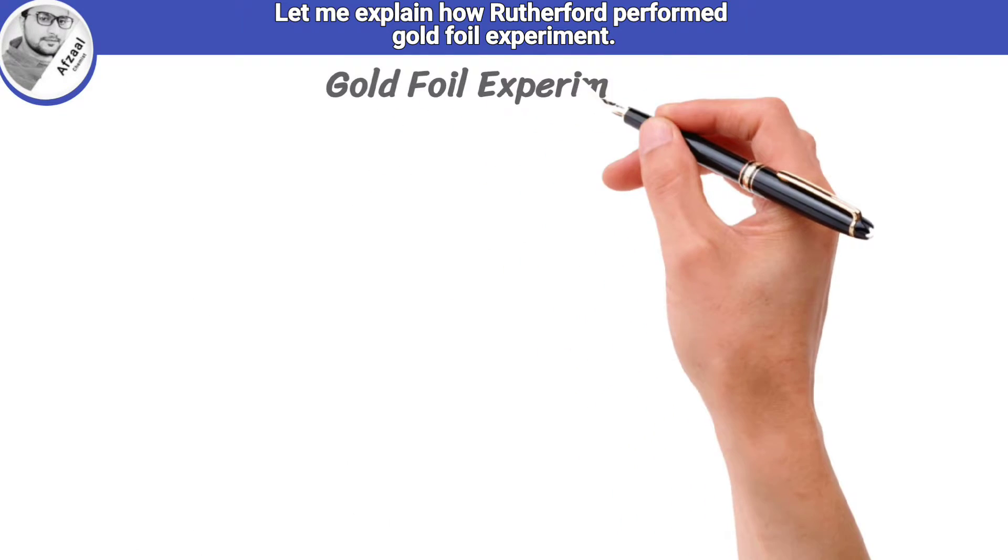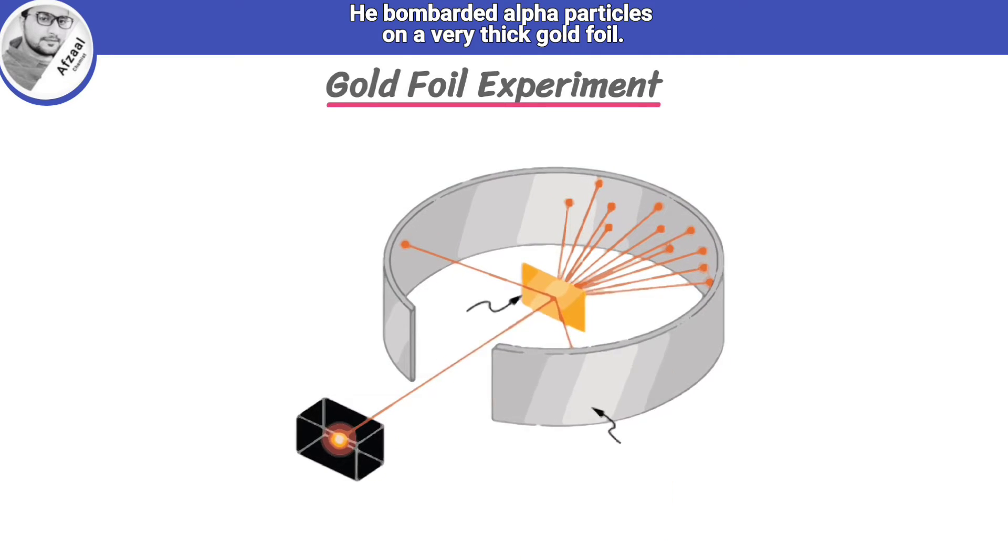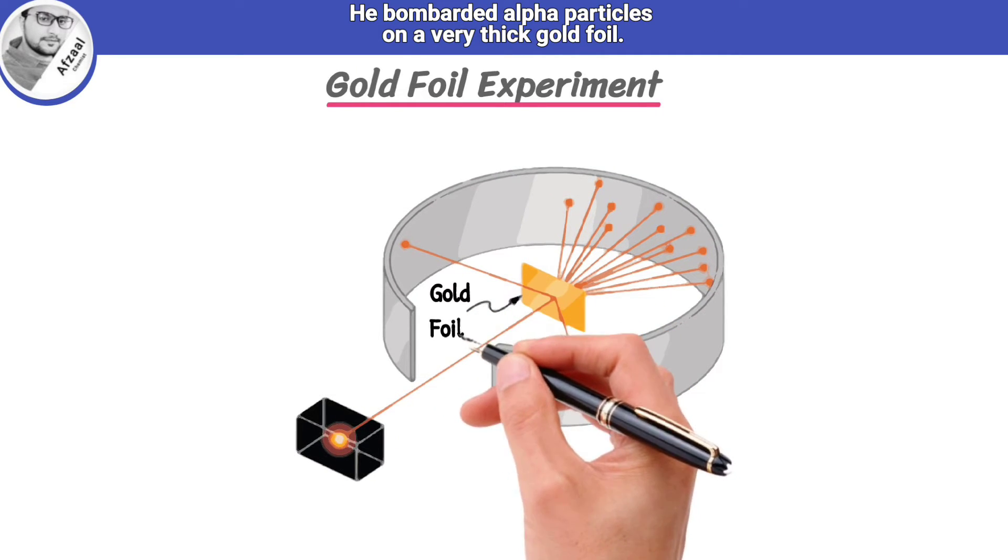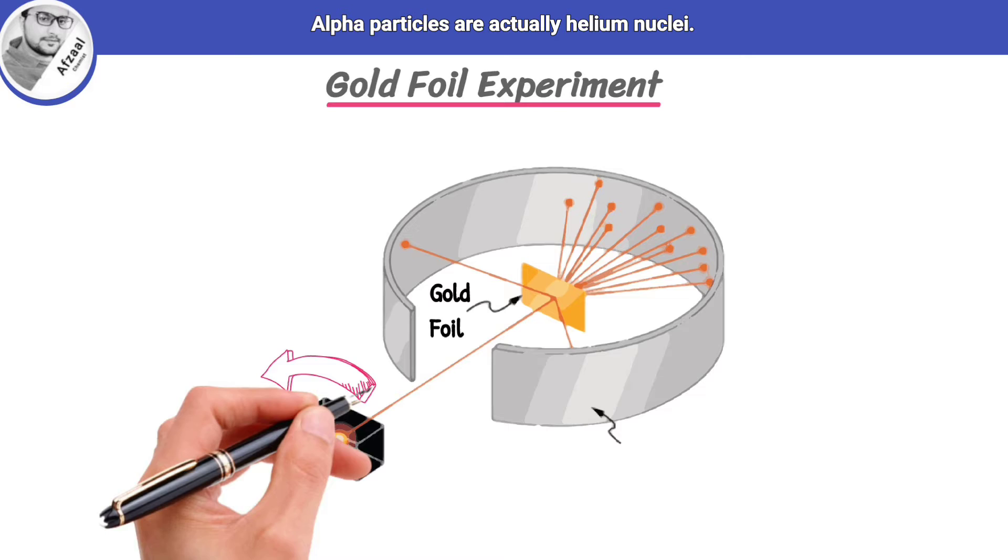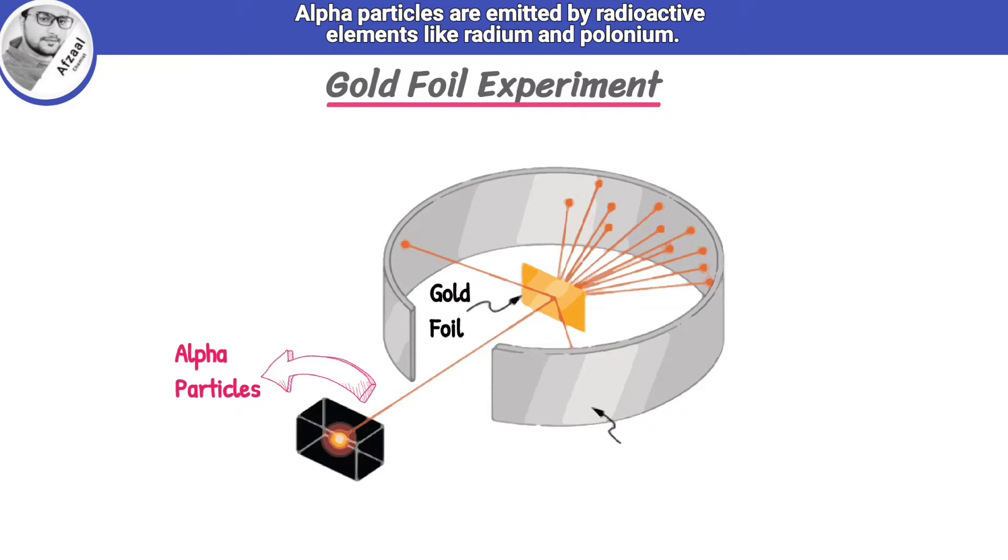Let me explain how Rutherford performed Gold Foil Experiment. He bombarded alpha particles on a very thick gold foil. Alpha particles are actually helium nuclei. They can penetrate through matter to some extent. Alpha particles are emitted by radioactive elements, like radium and polonium.